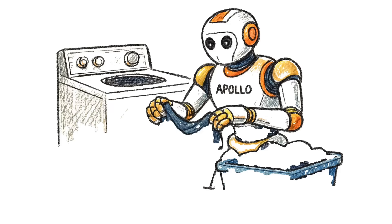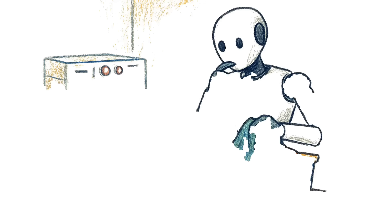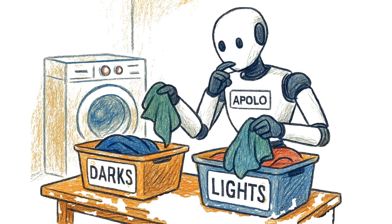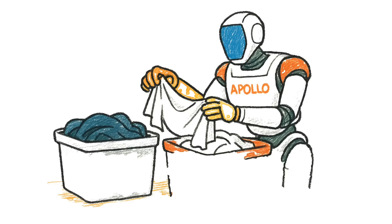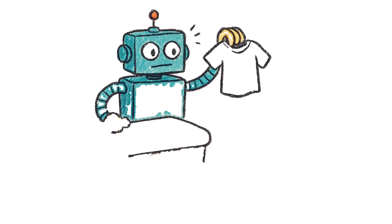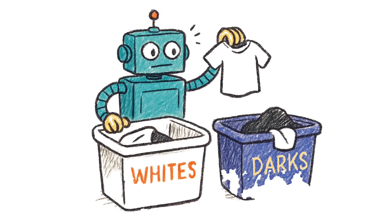Or how about this? An Apollo humanoid doing laundry. You tell it, put whites in white bins, darks in dark bins. Halfway through, you swap the bins. The robot notices, pauses, updates its plan, and keeps going.